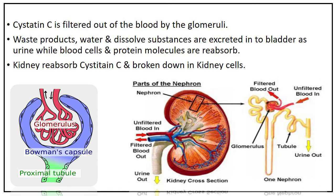Cystatin C is filtered out of the blood by the glomeruli, which are clusters of tiny blood vessels in the kidneys that allow water, dissolved substances, and wastes to pass through their walls while retaining blood cells and larger proteins. What passes through the walls of the glomeruli forms a filtrate fluid. The kidneys reabsorb Cystatin C, glucose, and other substances from this fluid. The remaining fluid and wastes are carried to the bladder and excreted as urine. The reabsorbed Cystatin C is broken down in the kidney cells and is not returned to the blood.